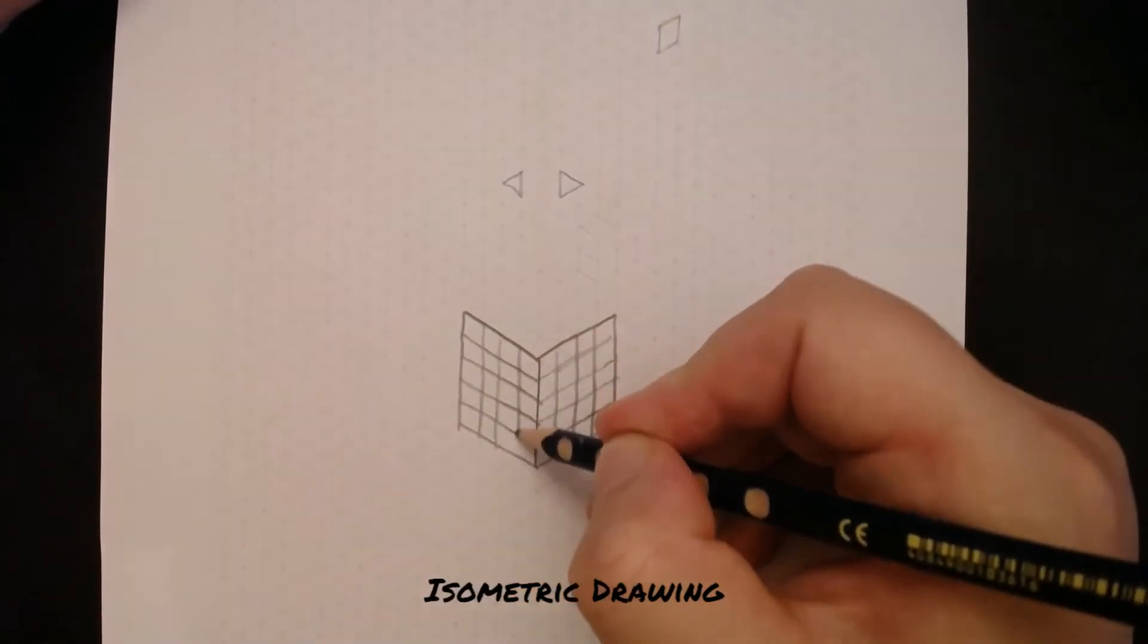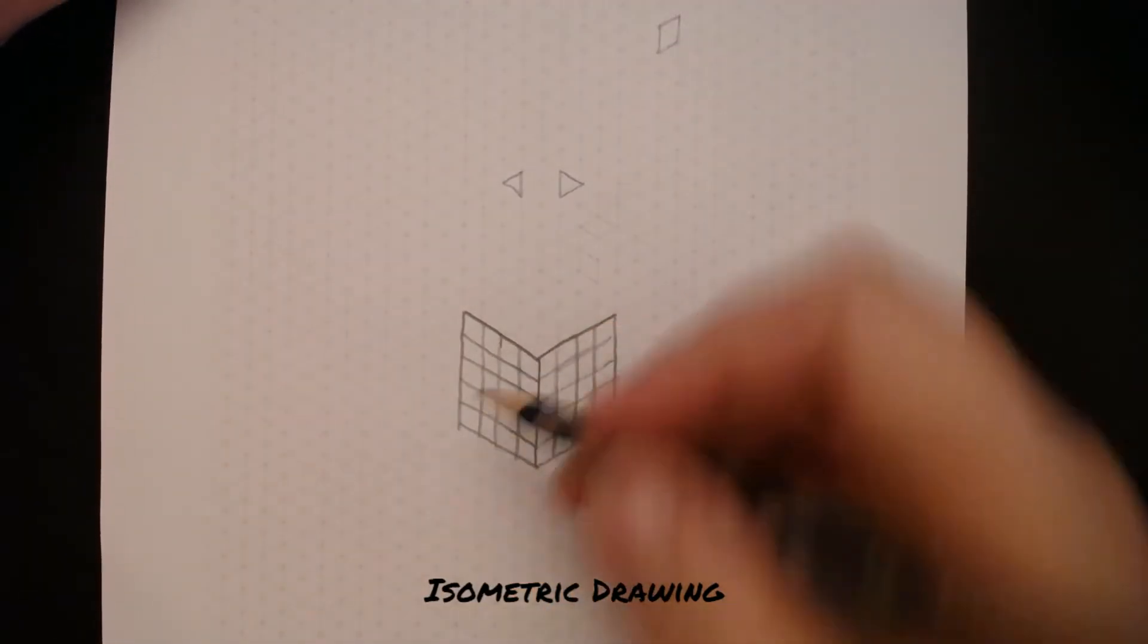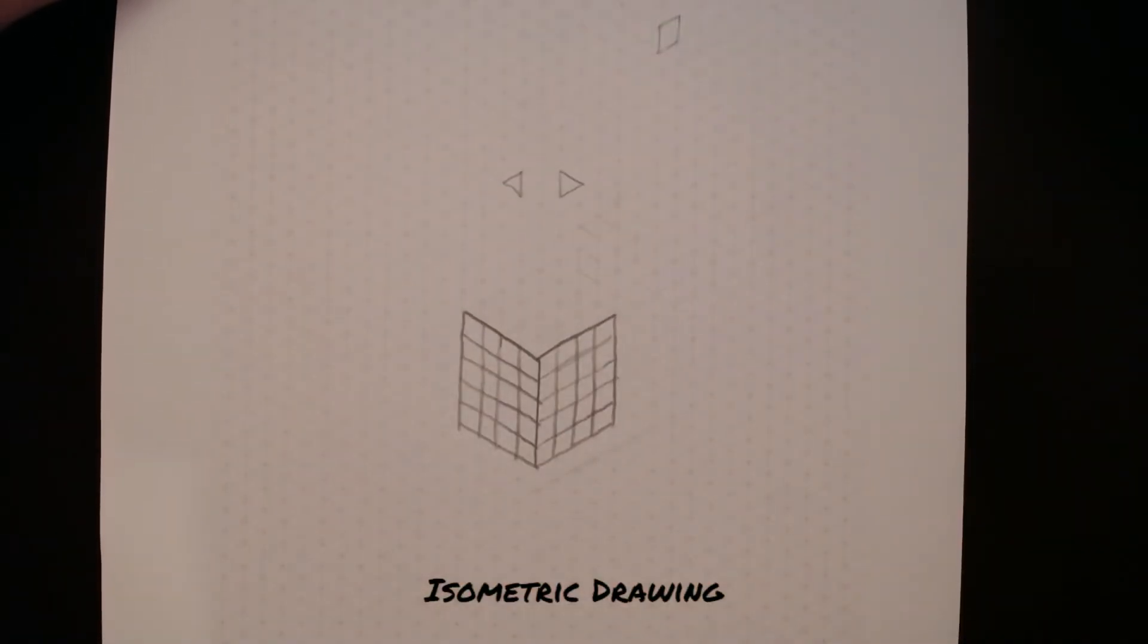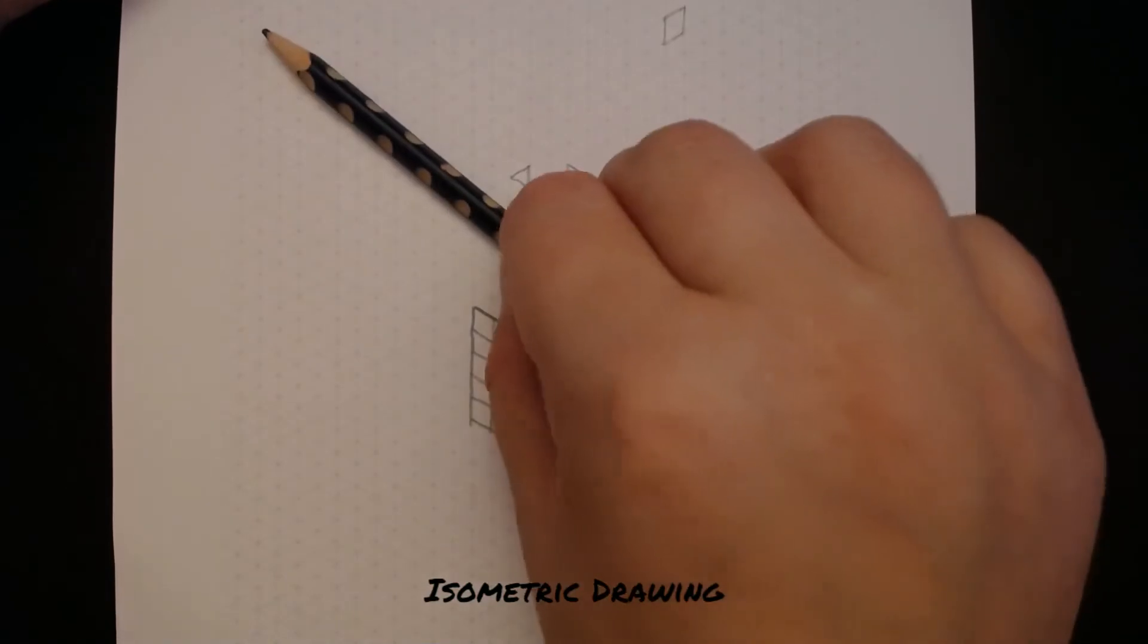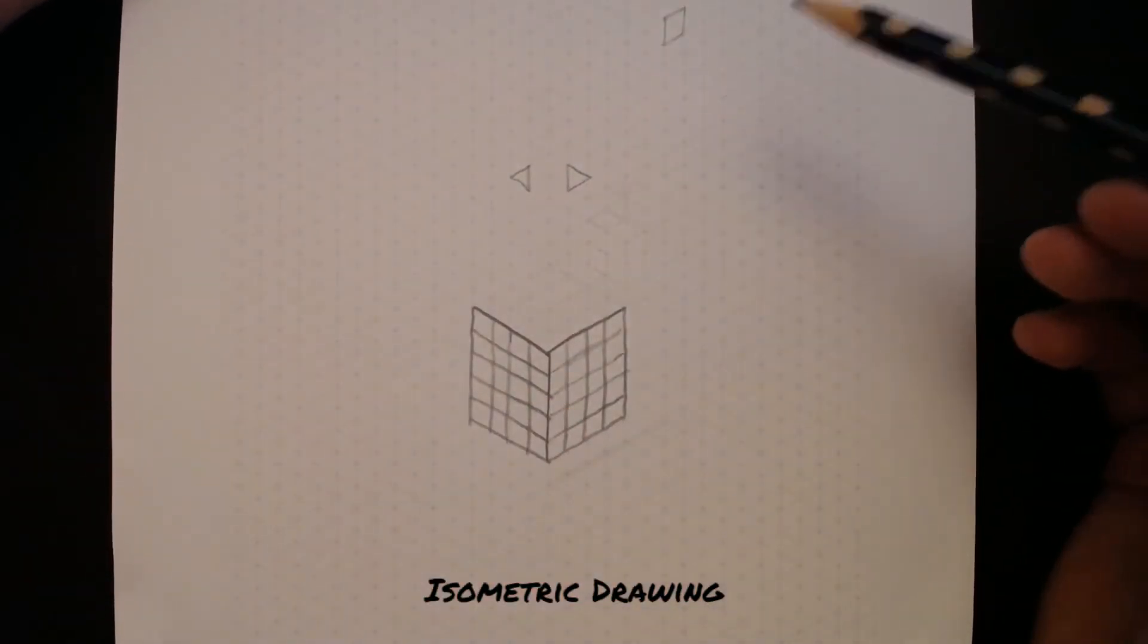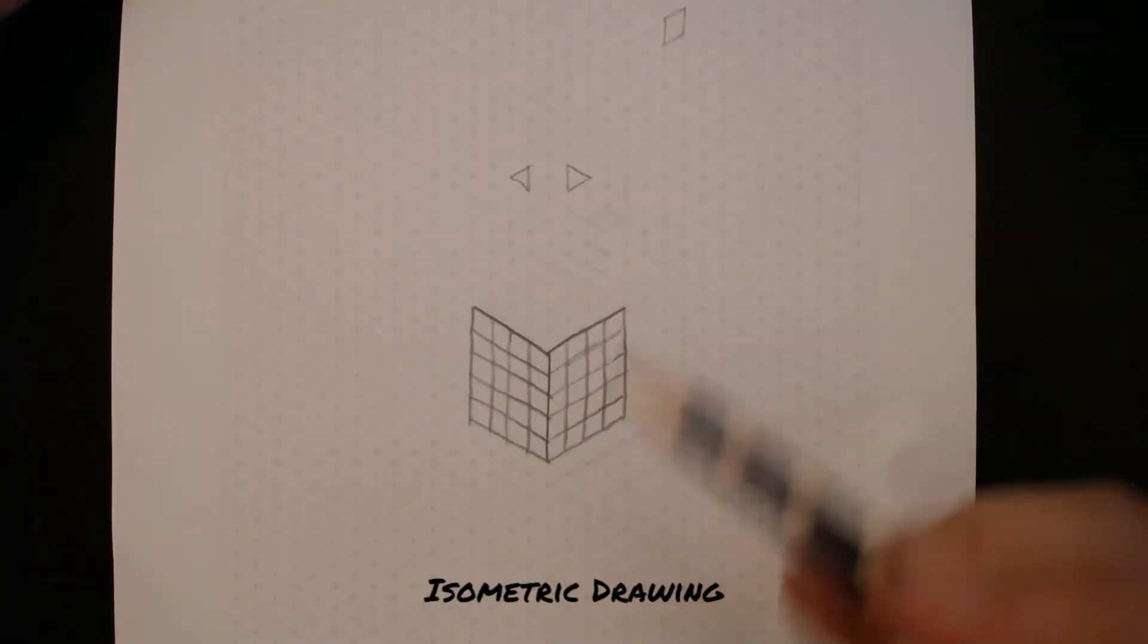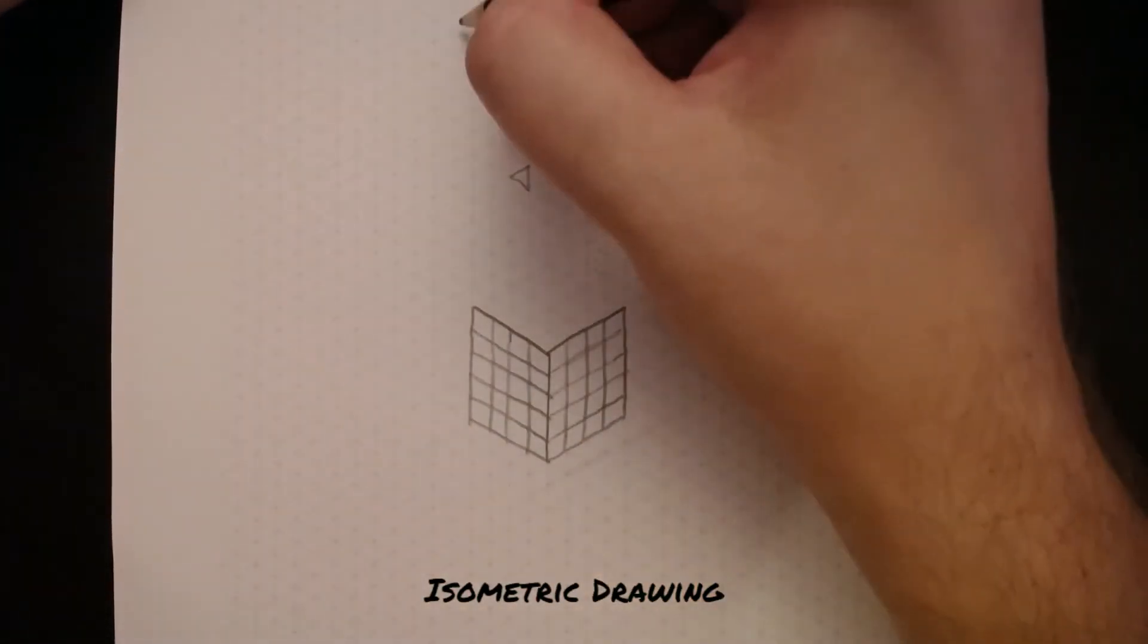Again, what I'd like you to do is have a look at your sheet and try and only focus on the lines going up and to the left and straight up. Hopefully, if you stare at the sheet, you should be able to see just a grid of squares that look like this.